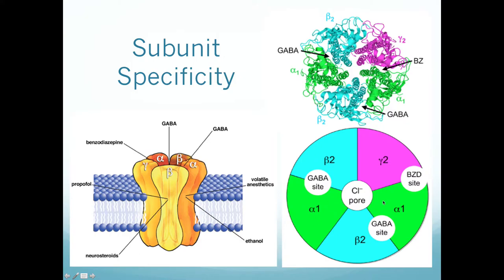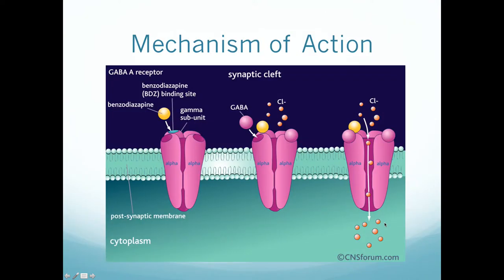The receptor has alpha-1, beta, and gamma subunits. GABA naturally binds between the alpha and beta subunits. Benzodiazepines selectively bind between the alpha and gamma subunits — a site separate from the GABA binding site. This means benzodiazepines are non-competitive drugs; they're not competing for the same site as the endogenous substrate.